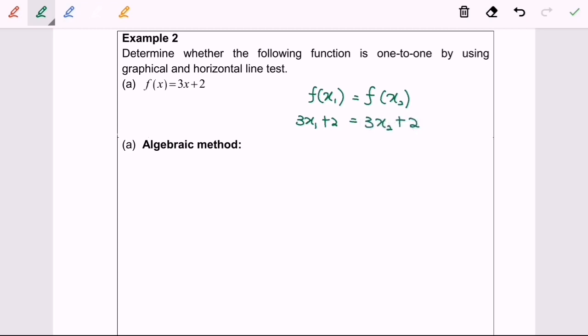Next, I'm going to rearrange and simplify. We will have 3x₁ equals 3x₂ + 2 - 2. Finally, we have 3x₁ equals 3x₂. Next, I'm going to simplify by dividing by 3 for both sides, and we will have x₁ equals x₂.